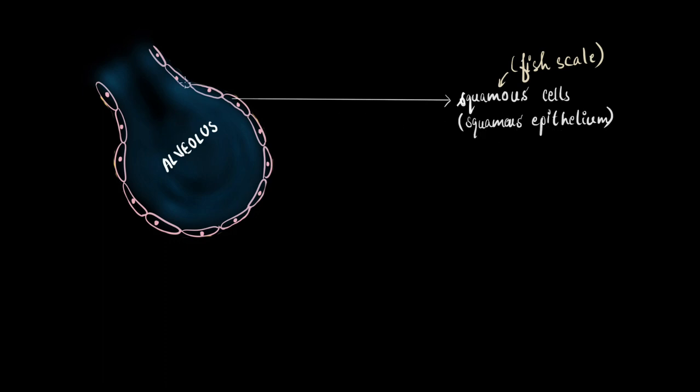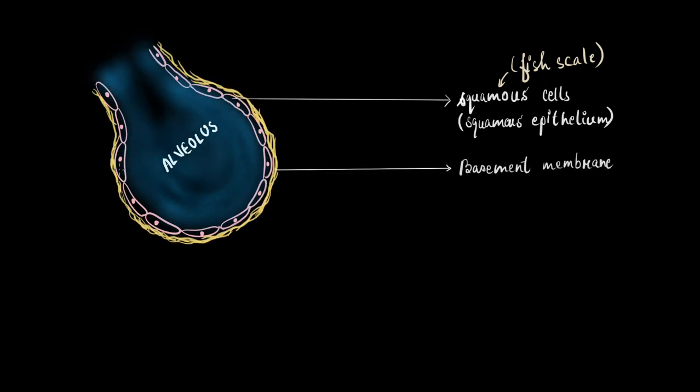Now, the squamous epithelium is so thin and flat that it cannot hold its structure alone. It needs something to sit on. And for that, the structural support is provided by this membrane around the squamous cells, which is called the basement membrane. Now, remember that basement membrane is not cellular. It is not made of any cells. It is just the extracellular matrix providing just the right support for the alveolus. And with these squamous cell layer and the basement membrane, they together form a very thin layer just perfect for the air to pass through.